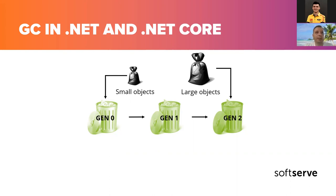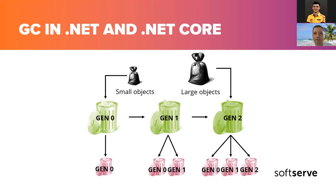When the garbage collector detects that the survival rate is high in a generation, it increases the threshold of allocations for that generation. A generation two garbage collection is also known as a full garbage collection because it reclaims all objects in all generations. So what about garbage collector pressure?